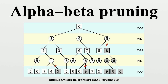Improvements over naive Minimax: The benefit of alpha-beta pruning lies in the fact that branches of the search tree can be eliminated. This way, the search time can be limited to the more promising subtree, and a deeper search can be performed in the same time. Like its predecessor, it belongs to the branch-and-bound class of algorithms. The optimization reduces the effective depth to slightly more than half that of simple Minimax if the nodes are evaluated in an optimal or near-optimal order, with a branching factor of B and a search depth of D.